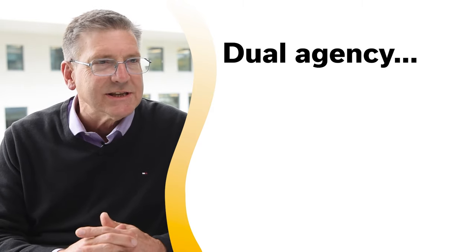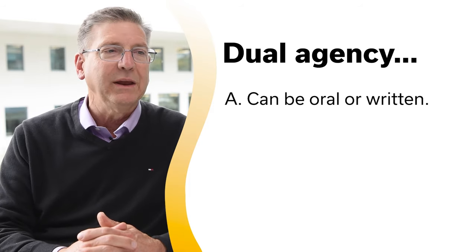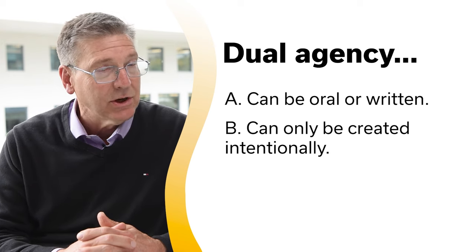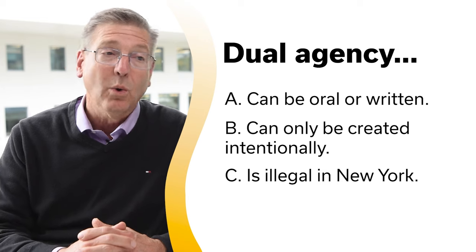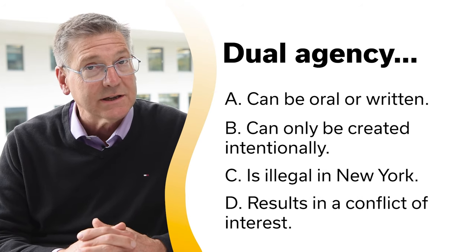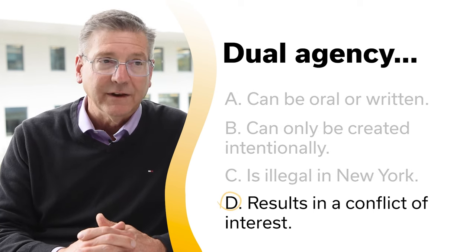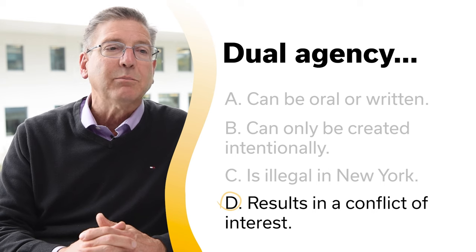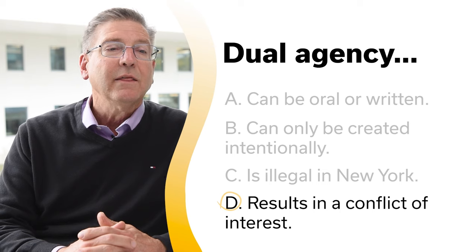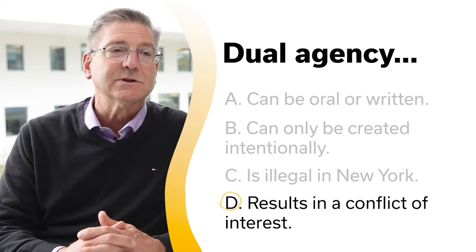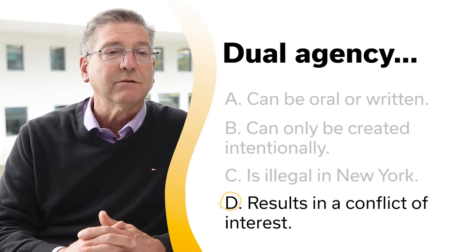Dual agency: A, can be oral or written; B, can only be created intentionally; C, is illegal in New York; or D, results in a conflict of interest. The correct answer is D, results in a conflict of interest. Because a broker in a dual agency relationship represents both the buyer and the seller, the broker is unable to put both clients' interests above the others, thereby resulting in a conflict of interest for the broker.